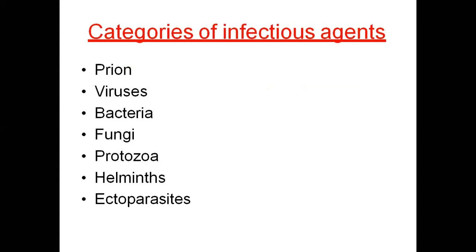How many categories of microorganisms are there? There are 10 categories of different microorganisms: bacteria, mycoplasma, protozoa, rickettsia, chlamydia, virus, fungus, algae, and yeast. These are different types of species, categorized as microorganisms.